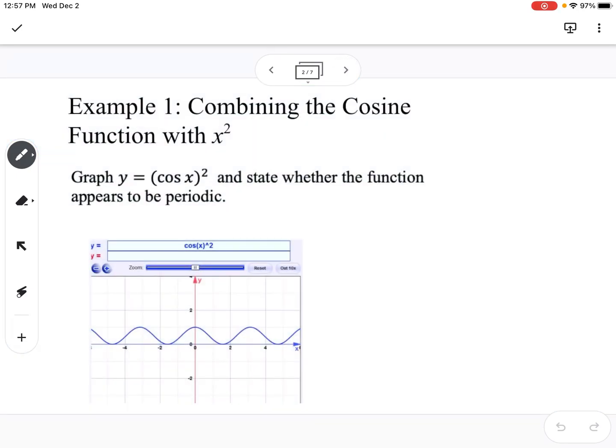Example one is combining the cosine function with x squared. So if we were to graph y equals cosine of x squared and then state whether the function appears to be periodic. This graph below is what we get if we graph y equals cosine of x squared. So we would say yes, it appears to be periodic.